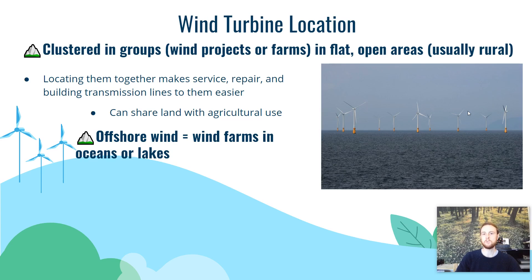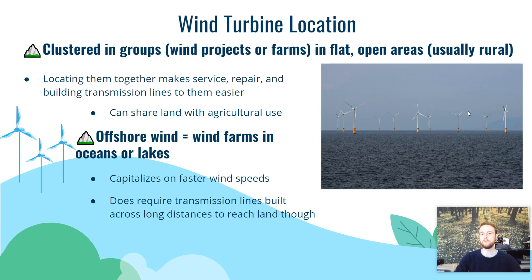We can also put turbines offshore, out in the water. This is done in areas with an ocean shoreline or even a large lake like Lake Michigan. Offshore turbines capitalize on the fact that there are no land forms blocking the wind, so wind speeds are typically higher and you can get a higher capacity factor. It also doesn't take up land, so you don't necessarily disrupt habitats. One drawback is that very long transmission lines — typically buried underground — are required to transport that electricity onto land where it will be used.